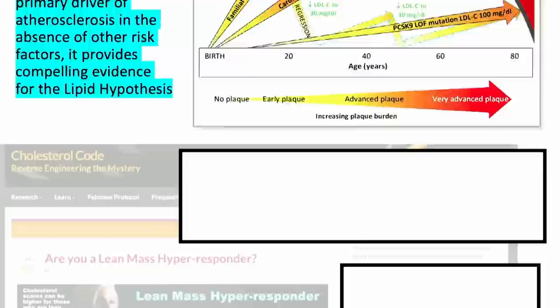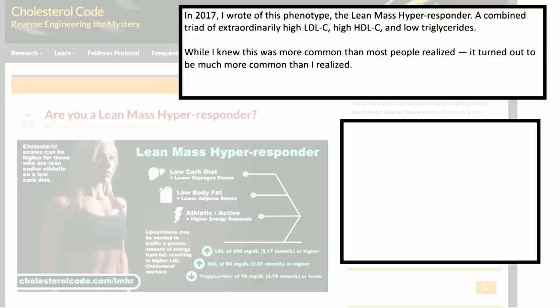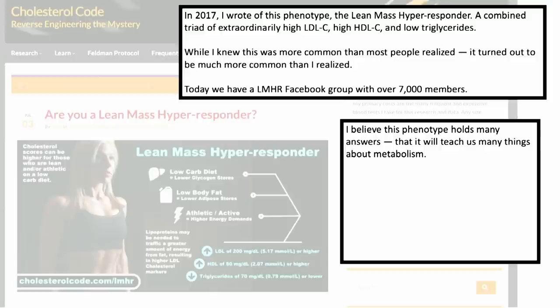Around that same time in 2017, I wrote of this phenotype: the lean mass hyper-responder — a combined triad of extraordinarily high LDL cholesterol, high HDL cholesterol, and low triglycerides. This was something we see commonly on a ketogenic diet. And while I knew this was more common than most people realized, it turned out to be more common than I realized. Today we have a lean mass hyper-responder Facebook group of over 7,000 members. I believe this phenotype holds many answers and is going to teach us important things about metabolism. But I also understand the reluctance of lipidology to study this given the expectation of harm — we need to know whether this population is in danger and whether they are rapidly developing atherosclerosis.